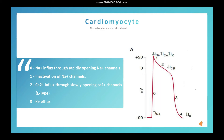In phase two, there is a plateau-like flat appearance in the diagram. The reason for this plateau phase is calcium influx through slowly opening L-type calcium channels. So L-type calcium channels are responsible for the plateau phase. Phase three occurs because of efflux of potassium through multiple types of potassium channels. Now you have an idea about the electrophysiology of cardiomyocytes.